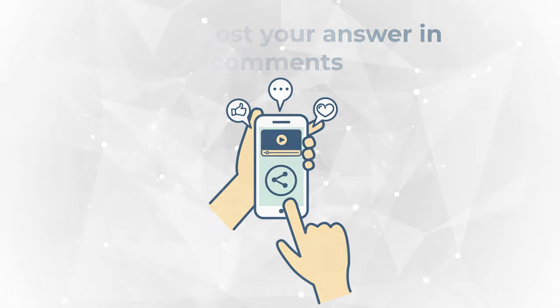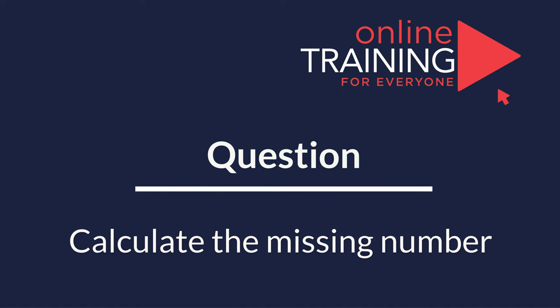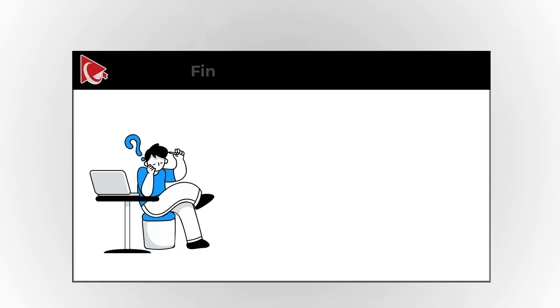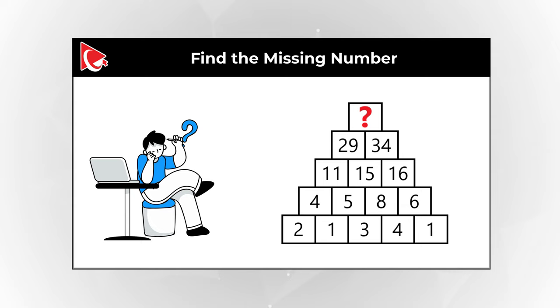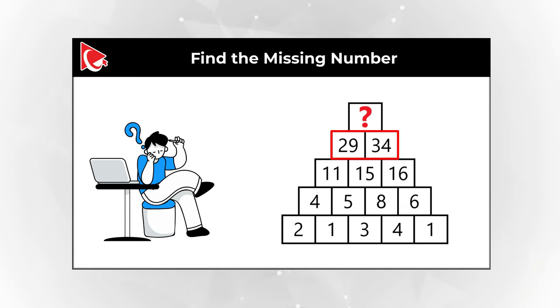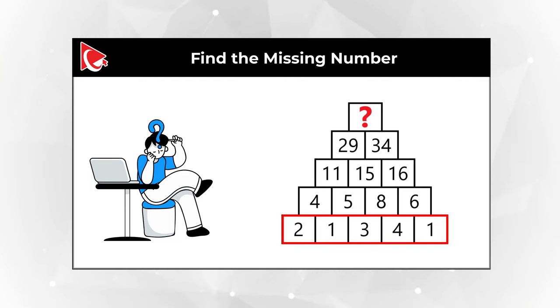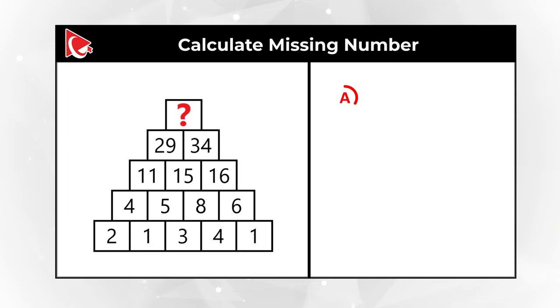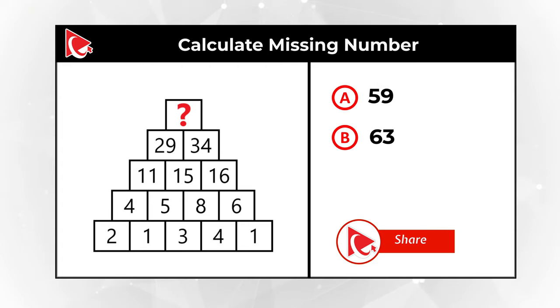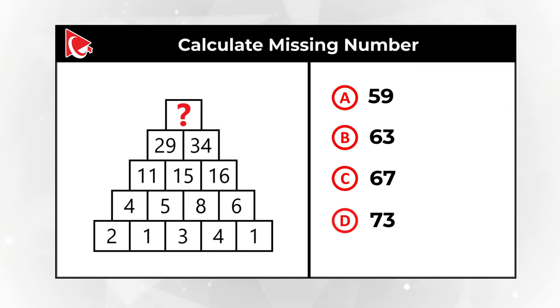Here is a tricky problem that you might find challenging to solve. You are presented with a pyramid. Top of the pyramid starts with the missing number that you need to calculate. If you go down, second row contains numbers 29 and 34. Next row contains numbers 11, 15, and 16. The following row has numbers 4, 5, 8, and 6. And then the last row has numbers 2, 1, 3, 4, and 1. You need to calculate the missing number, which is in the top row. And you have four different choices. Give yourself a little bit of time, maybe 10 to 15 seconds, maybe a little bit longer, to see if you can answer this question.